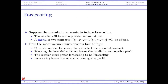Now suppose the manufacturer is still offering a rebate contract but wants to induce forecasting. Then the retailer will have a private demand signal, so the manufacturer must offer a menu of two contracts — a high contract and a low contract — for the retailer to self-select. If the retailer sees a high demand signal, she chooses the high contract; otherwise, she chooses the low contract. We need the menu to be incentive compatible.